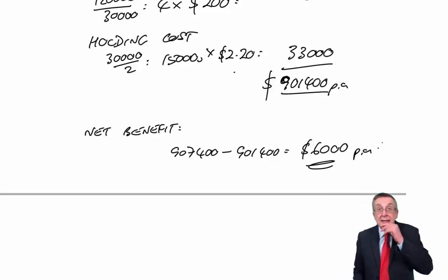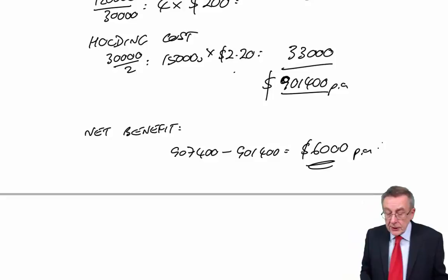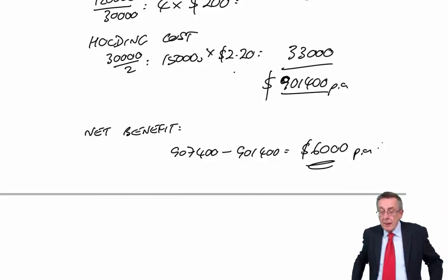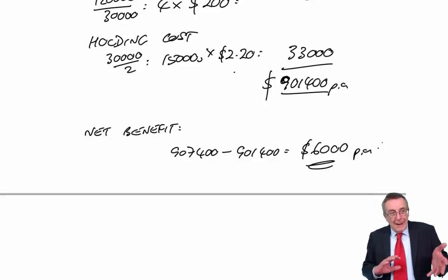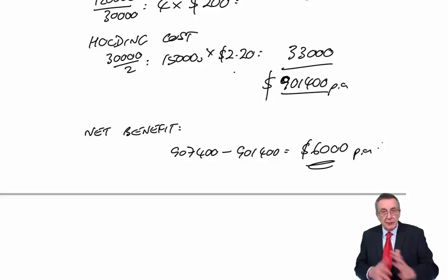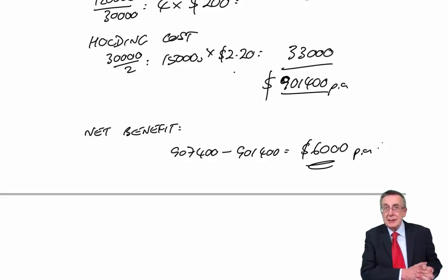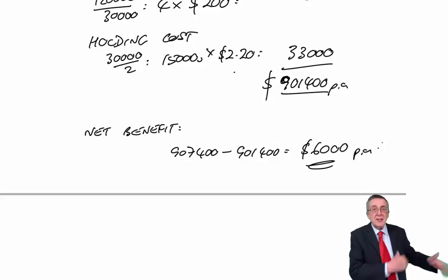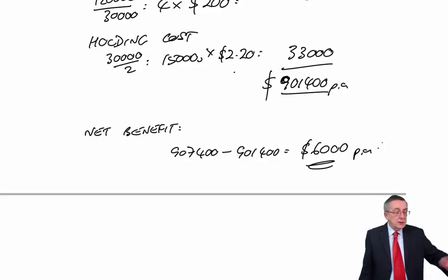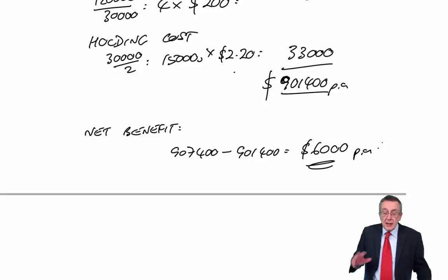Two things before I leave it. One is, you can set this out in different ways. I think the easiest is just to cost both out and look at the difference. You could have calculated what's the saving on the discount on its own, 3.6% of total cost, and separately what's the extra cost of holding and ordering costs. Several ways you could lay it out. That doesn't matter.